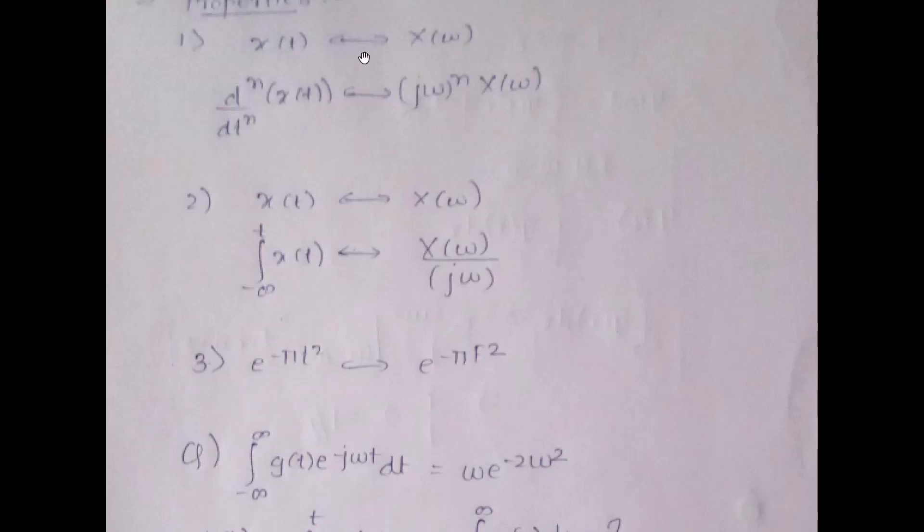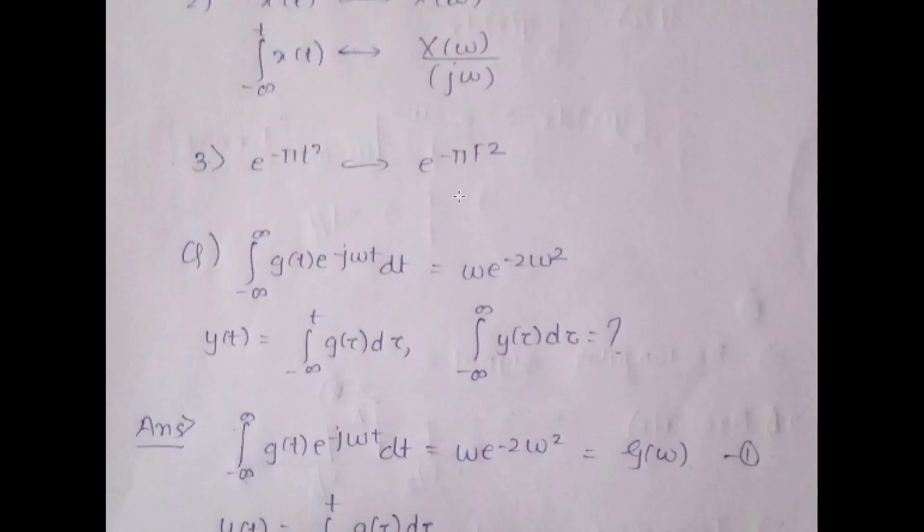Next, let us understand a few properties of CTFT and apply them to a numerical. If x(t) corresponds to X(ω) in CTFT, then differentiating x(t) n times gives (jω)^n · X(ω). Similarly, integrating x(t) from minus infinity to t gives X(ω) / jω. Also, e^(−πt²) transforms to e^(−πf²).